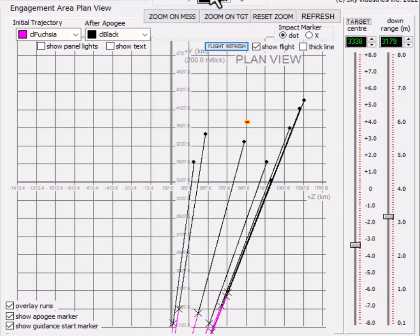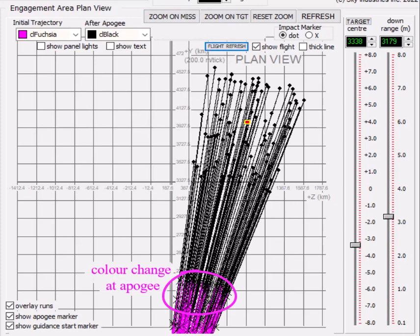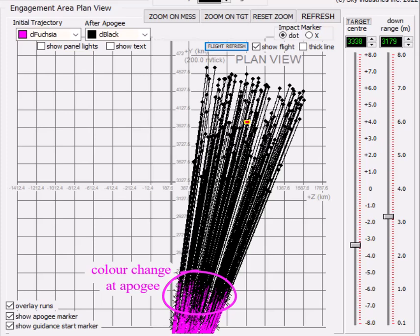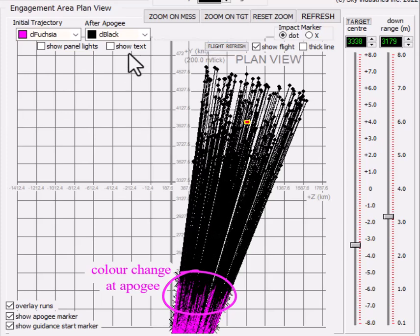Maybe it's interesting to compare flight paths for unguided and guided rounds. Unguided rounds are shown in black, guided rounds are shown in teal.